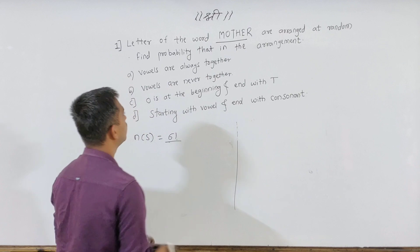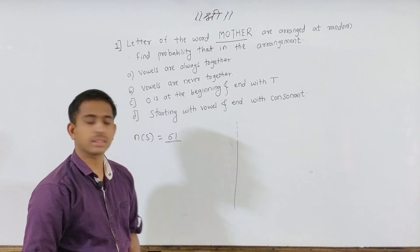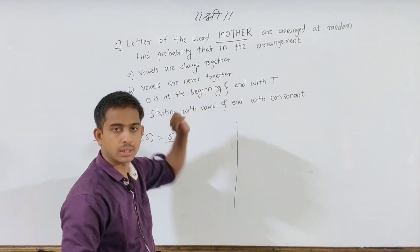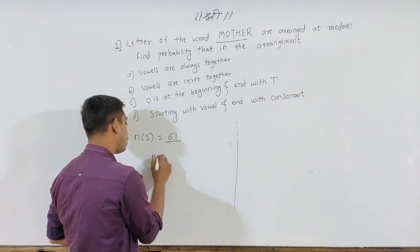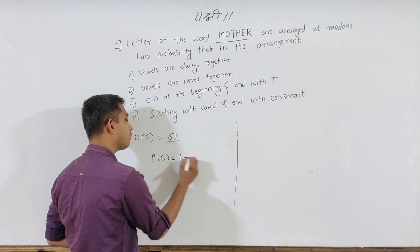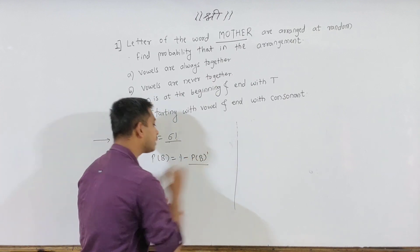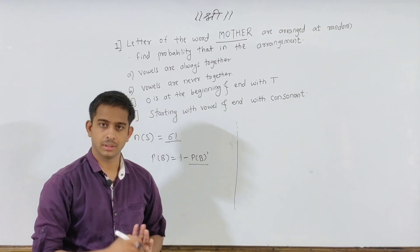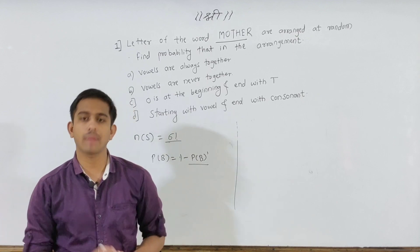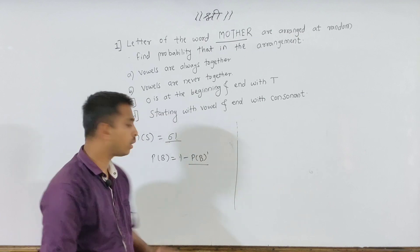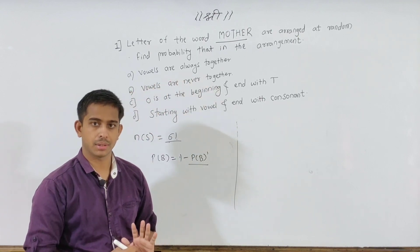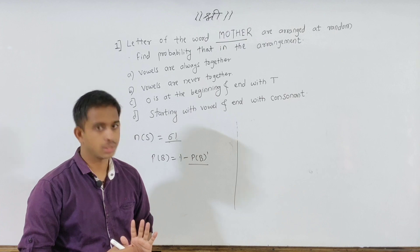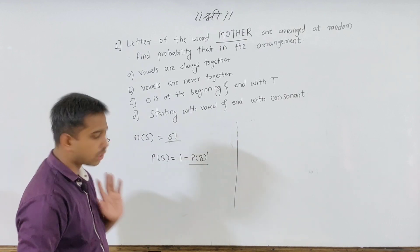The other condition: vowels are never together. What is the answer? When vowels are always together the probability P(A) is known. So for P(B), where vowels are never together, we say P(B) = 1 − P(A). This is the remaining probability. So the answer to the second condition is 1 minus the first result.